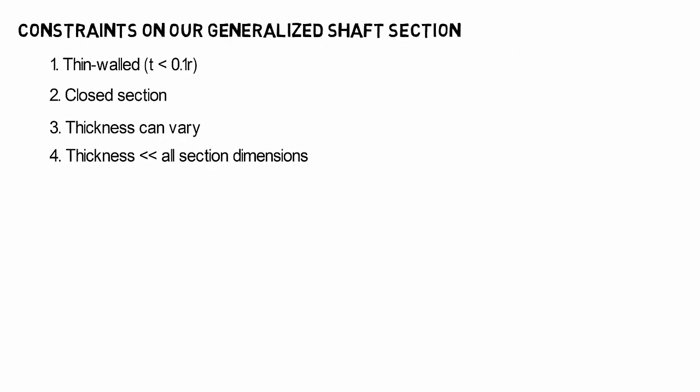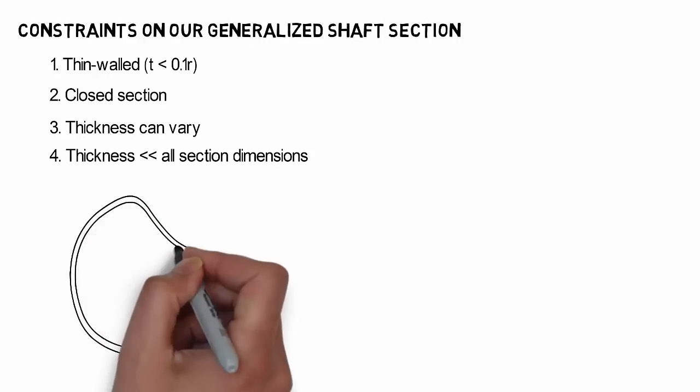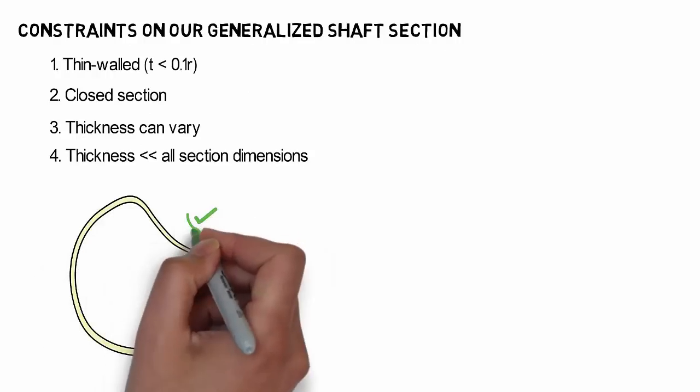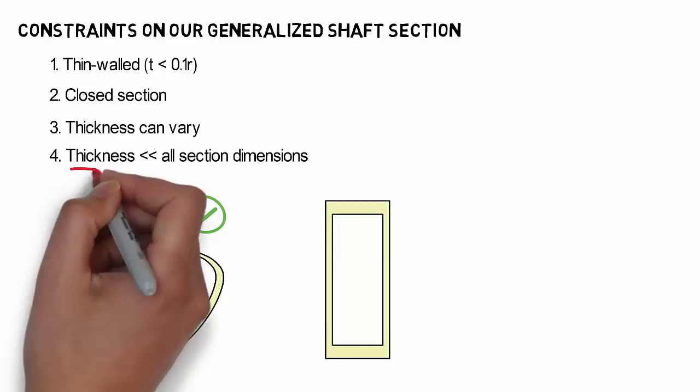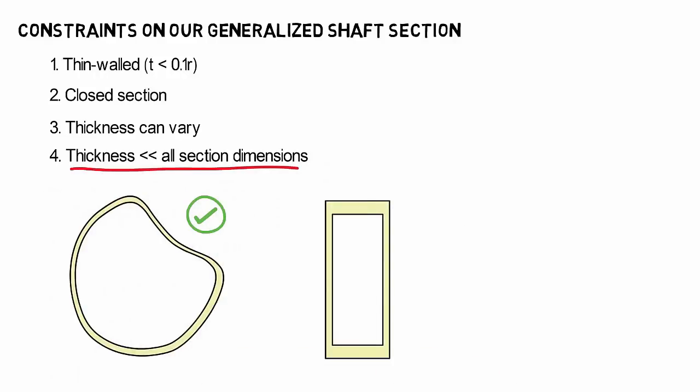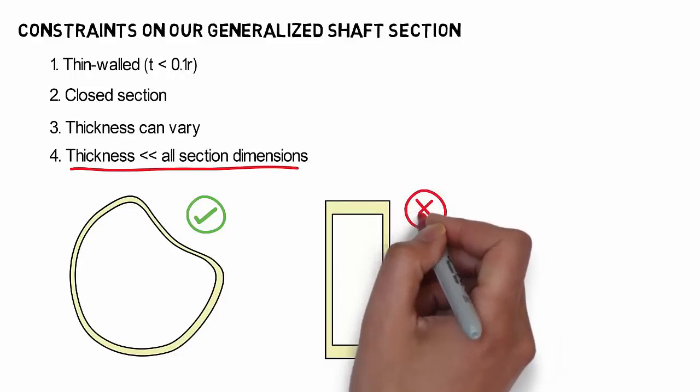To illustrate these constraints, consider the following three cross-sections. The first section clearly meets all of these constraints. However, in the rectangular section the wall thickness is not sufficiently small compared to the overall width of the cross-section and thus would not be suitable for this analysis.